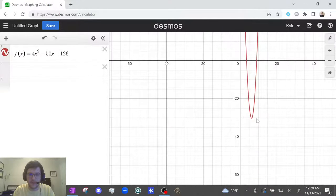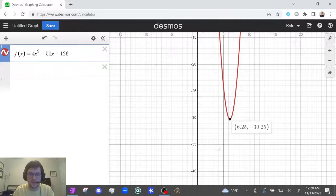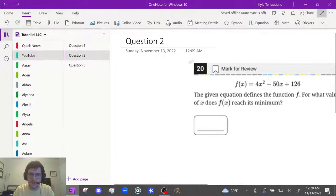Anyway, I'm gonna zoom out so I can find the vertex. It looks like it's down here. This is our minimum. So let's click on it twice. And it tells us that the minimum is 6.25 comma negative 30.25. So let's write that.